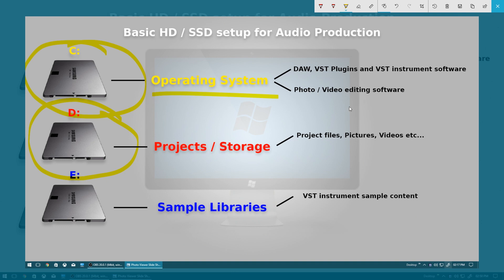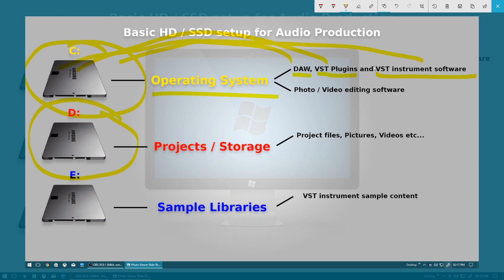Things that you tend to install to your operating system drive, your C drive, is generally speaking all of your programs. So anything like a DAW, your music software such as Cubase, Pro Tools, Studio One, whatever you're using, that will be installed to your C drive. Things like VST plugins, EQs, compressors, effects — all that goes on the C drive. And when it comes to VST instruments, the software side of things — the program — the VST instrument program will also get installed to the C drive.